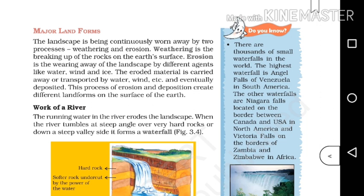Erosion is the wearing away of the landscape by different agents like water, wind and ice. These two processes — weathering and erosion — continuously work on the landscape.